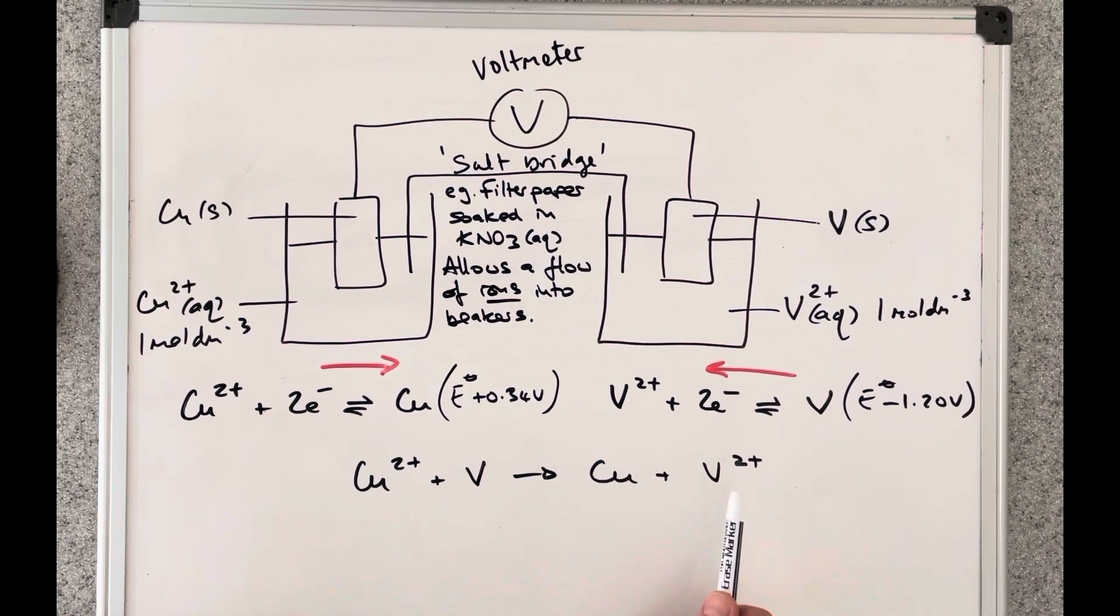So the overall reaction for this electrochemical cell is going to look like this. So the copper 2 plus ions are going to react with the vanadium. Remember this is taking the electrons from the vanadium and generate copper and vanadium 2 plus ions as a result.